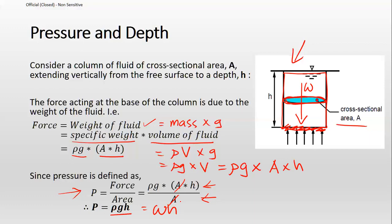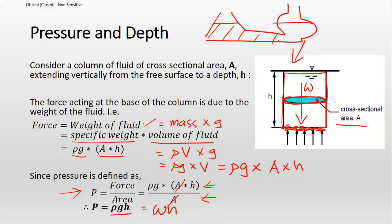Pressure at the same depth must always be the same — regardless of the shape or cross-sectional area. It doesn't matter how wide or how narrow the surface area is. This is illustrated by the classic elementary example where water fills containers of different shapes, but at the same level the pressure is always equal because pressure is only dependent on depth.